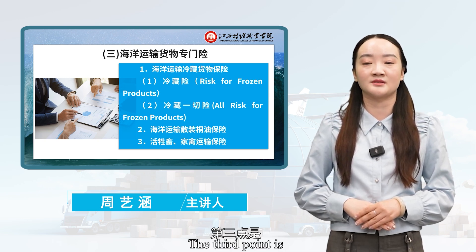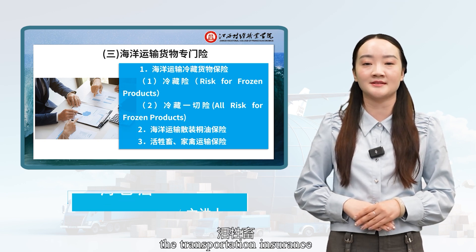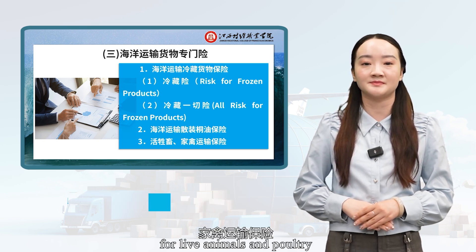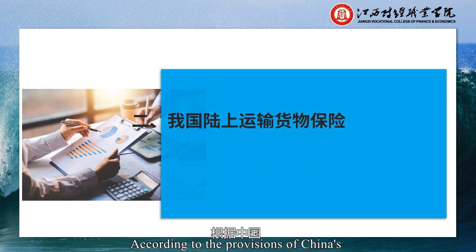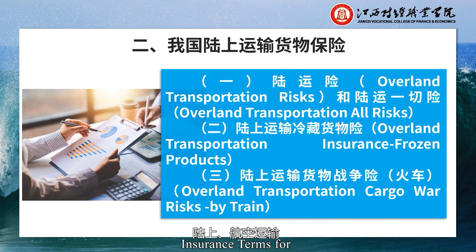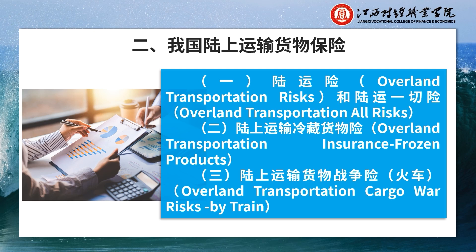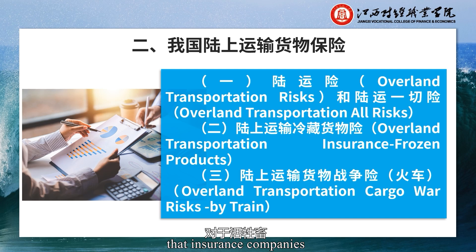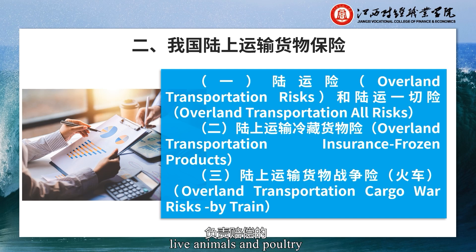The third point is the transportation insurance for live animals and poultry. According to the provisions of China's Marine, Land, or Air Transportation Insurance Terms for live animals and poultry, this is an additional insurance under which insurance companies are responsible for compensating for the deaths of live animals and poultry during transportation.